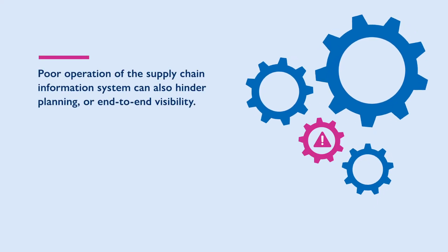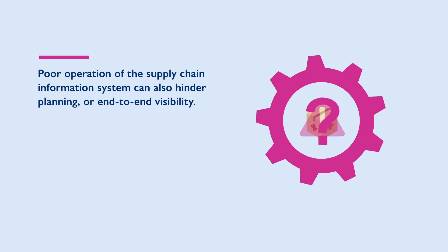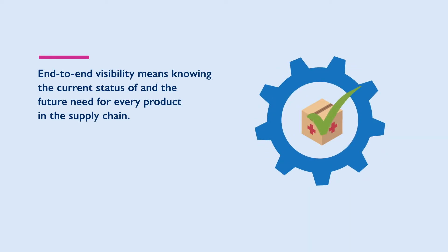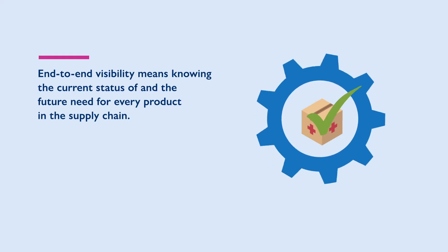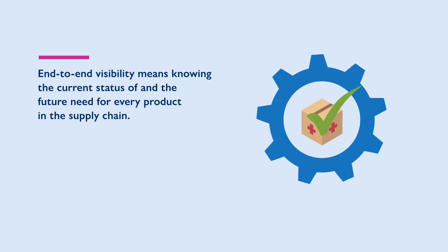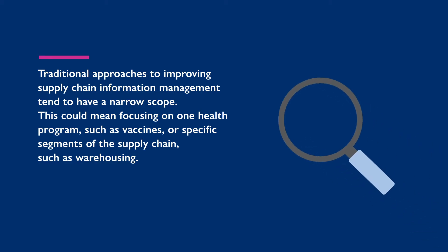Poor operation of the supply chain information system can also hinder planning or end-to-end visibility. End-to-end visibility means knowing the current status of and the future need for every product in the supply chain. Traditional approaches to improving supply chain information management tend to have a narrow scope, such as focusing on one health program like vaccines, or specific segments of the supply chain such as warehousing.